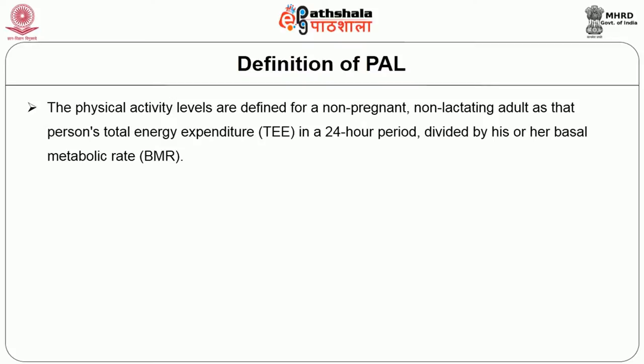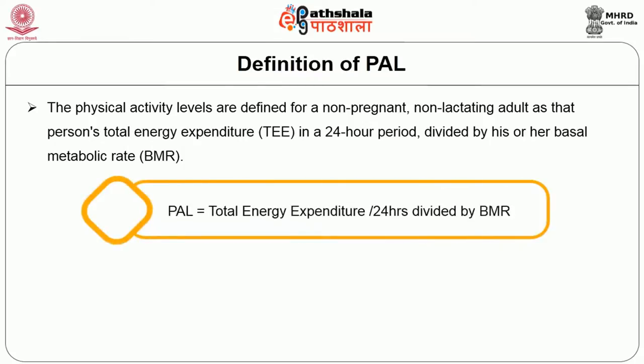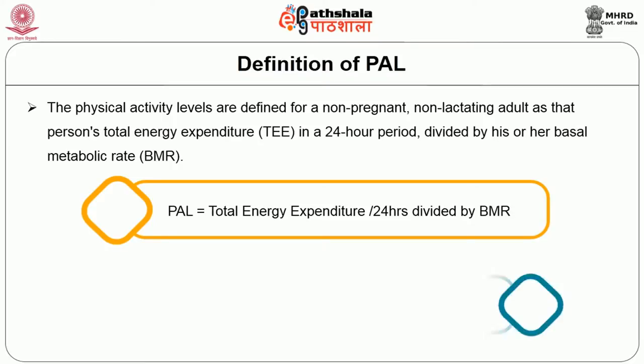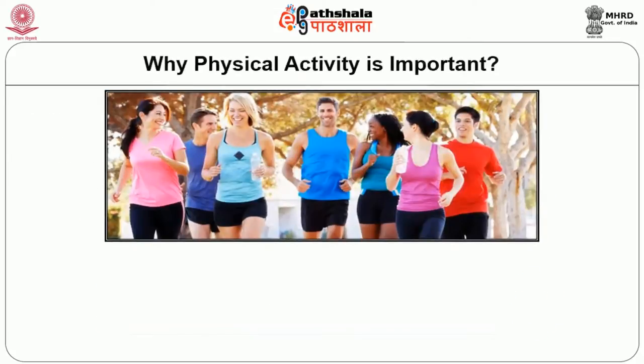Physical activity levels are defined for a non-pregnant, non-lactating adult as that person's total energy expenditure (TEE) in a 24-hour period divided by his or her basal metabolic rate. The formula is: PAL = Total Energy Metabolism / (24 hours × BMR), or PAL = Total Energy Expenditure / Basal Energy Expenditure.